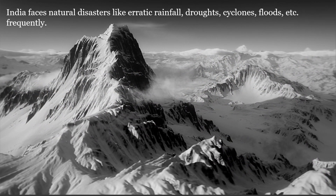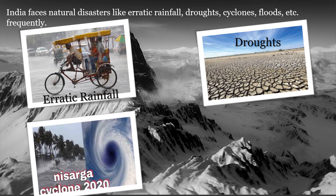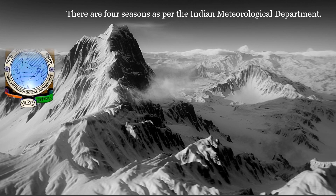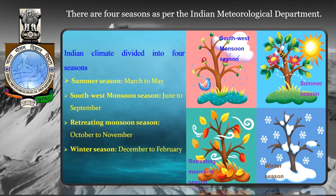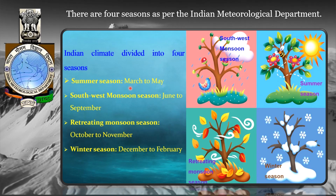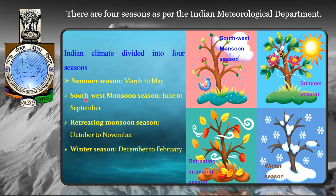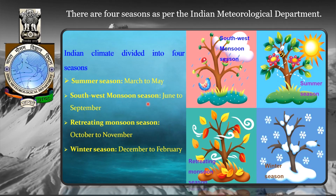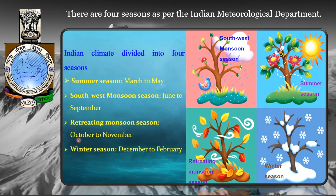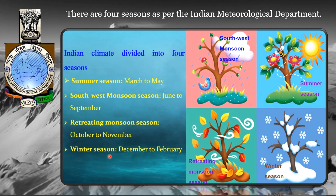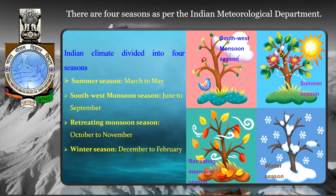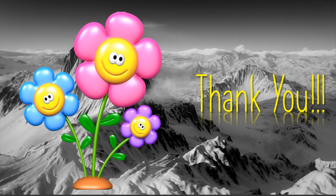India faces natural disasters like erratic rainfall, droughts, cyclones, and floods frequently. According to the Indian Meteorological Department, India experiences four seasons: the hot weather season (summer) from March to May, the monsoon or southwestern monsoon season from June to September, the retreating monsoon season from October to November, and the cold weather season (winter) from December to February. With this, we have come to an end of today's session. Thank you — stay home and stay safe.